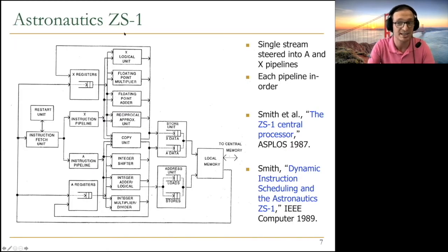And this is an example. This is the Astronautics CS1 processor. What they did was they have a single instruction stream, instruction fetch unit, and they basically separate it dynamically into an access processor, access instruction pipeline, and an execute processor, execute instruction pipeline. Basically A versus X over here. Each pipeline is in order, so this is very important.